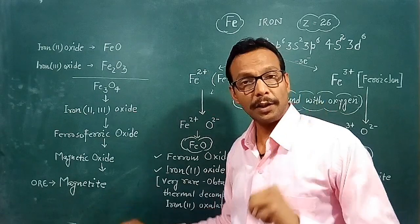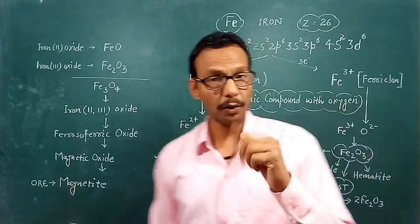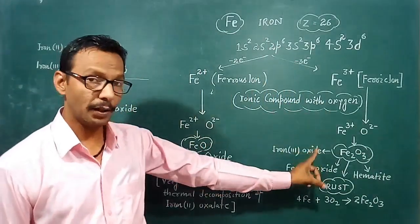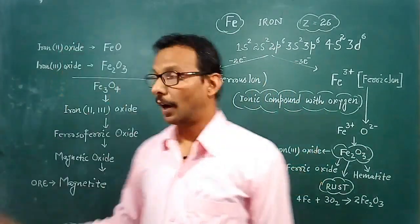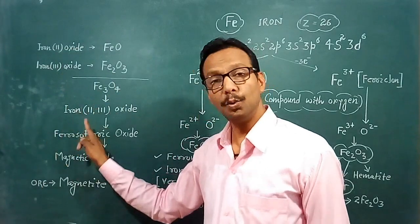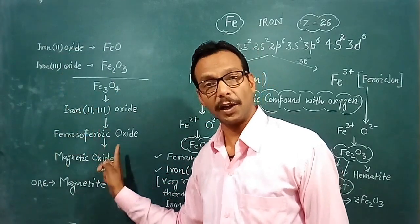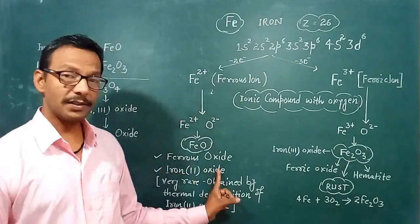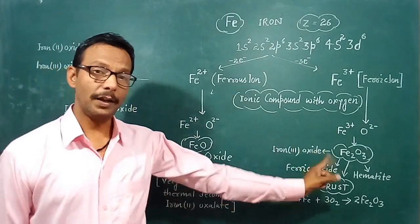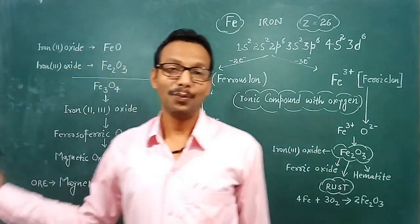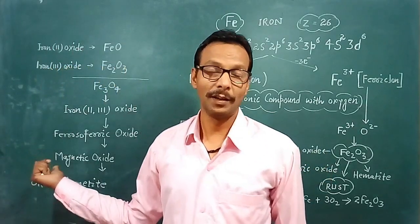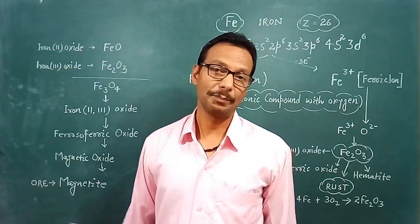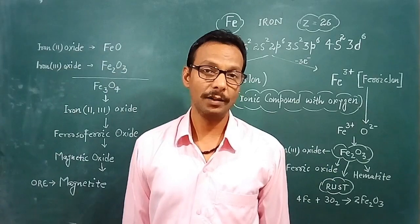So there are three types of iron oxides: iron(II) oxide (FeO), iron(III) oxide (Fe2O3), and iron(II,III) oxide (Fe3O4). Their traditional names are ferrous oxide, ferric oxide, and ferrous ferric oxide respectively. I hope this lesson was very helpful for you. Thanks.